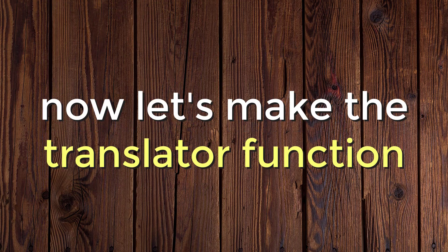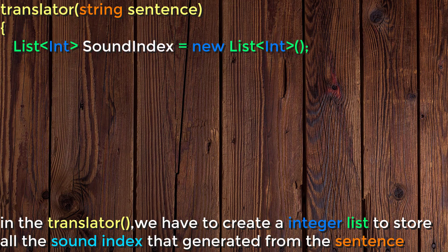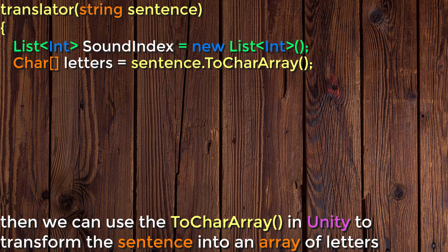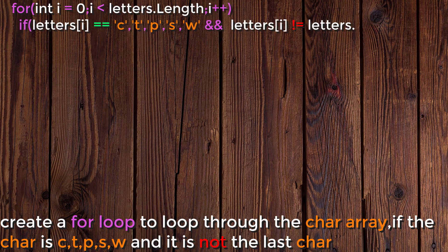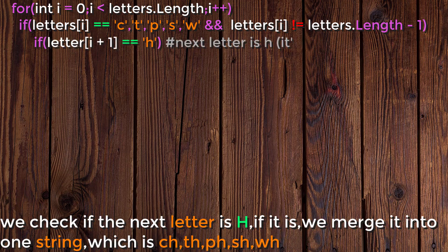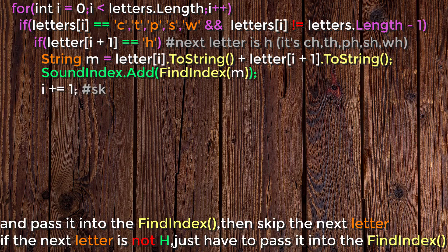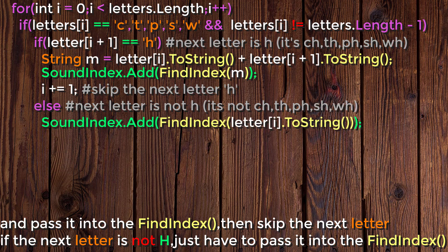Now let's make the translator function. In the translator function, we create an integer list to store all the sound indices generated from the sentence. Then we use the toCharArray function in Unity to transform the sentence into an array of letters. We create a for loop to loop through the char array. If the char is c, t, p, s, or w, and it is not the last char, we check if the next letter is h. If it is, we merge it into one string — ch, th, ph, sh, or wh — and pass it into the findIndex function, then skip the next letter. If the next letter is not h, we just pass it into the findIndex function.